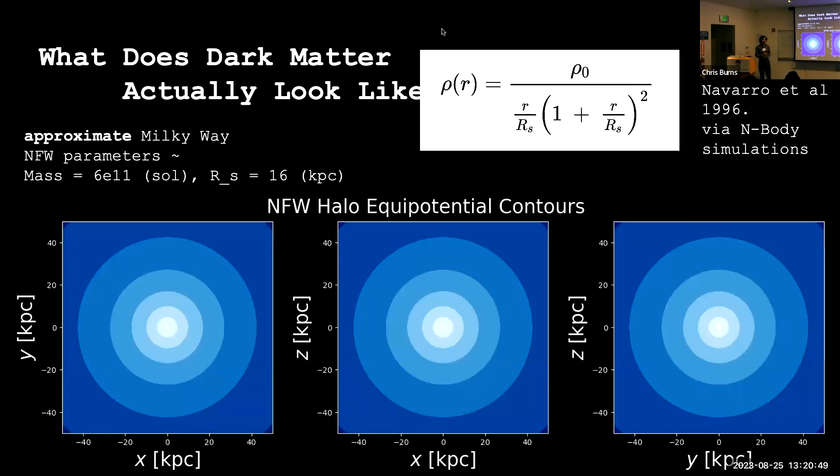So what does this dark matter actually look like? To give a picture in your mind, it looks like this. This is the NFW model, the most popular model today developed empirically in the 90s by Navarro, Frenk and White. It's a spherically symmetric radial density profile characterized by some mass and some radius. These are the parameters for the Milky Way, and you can see that a majority of the mass is contained within this characteristic radius.